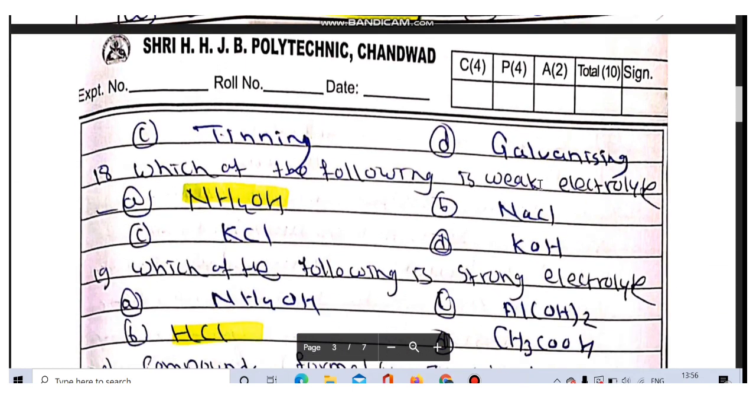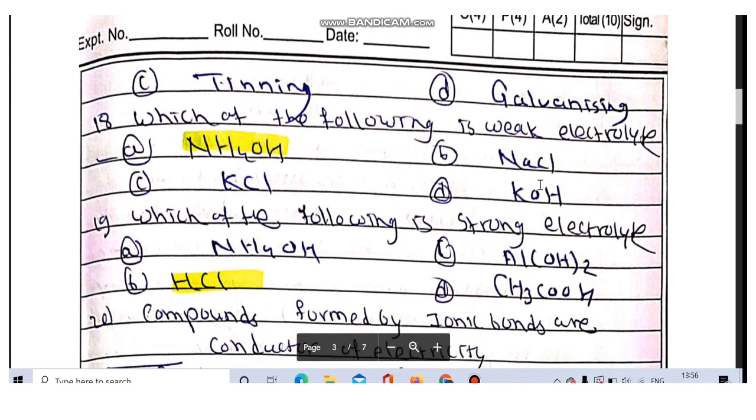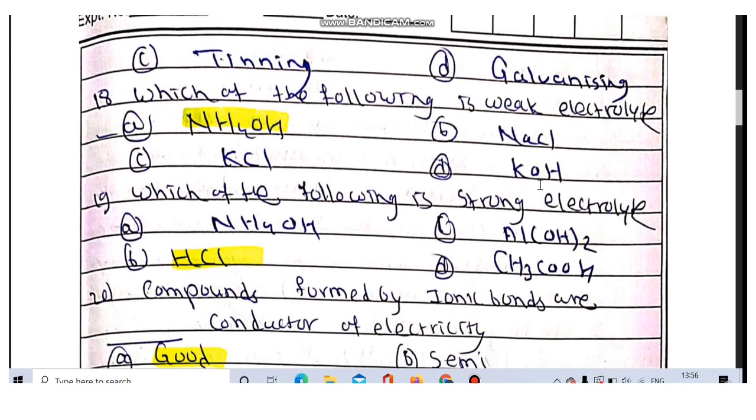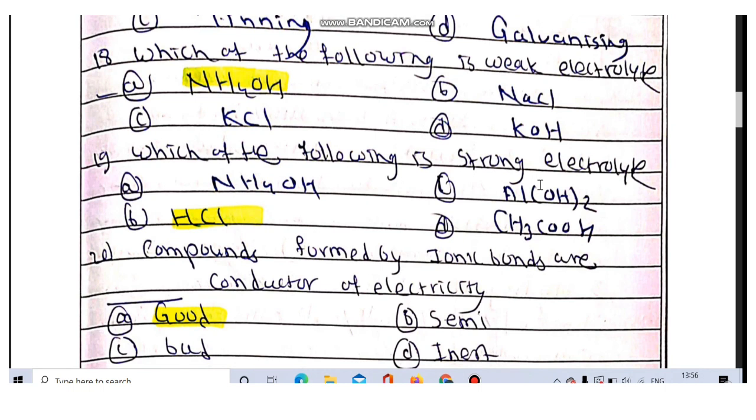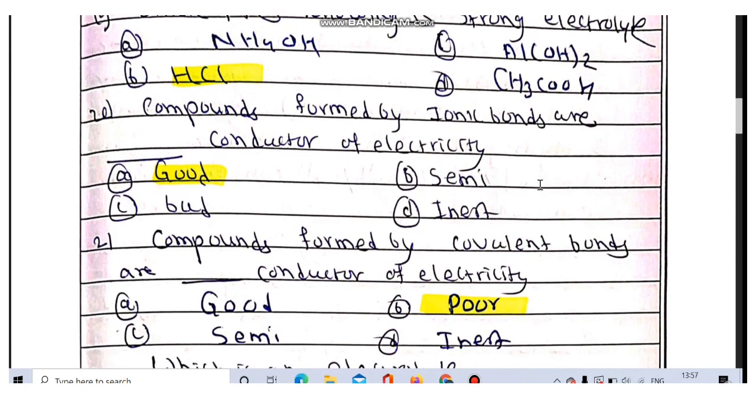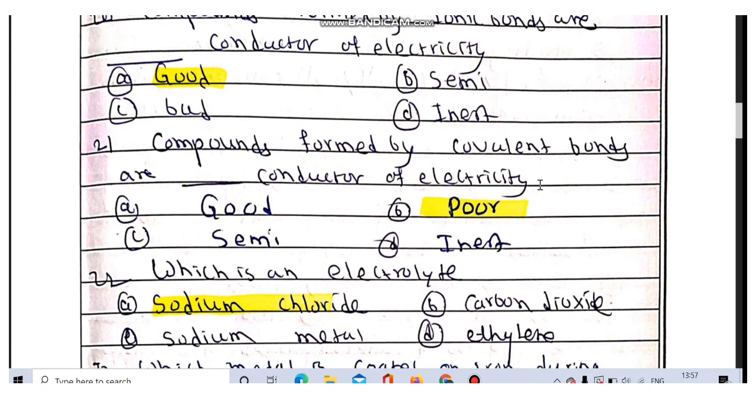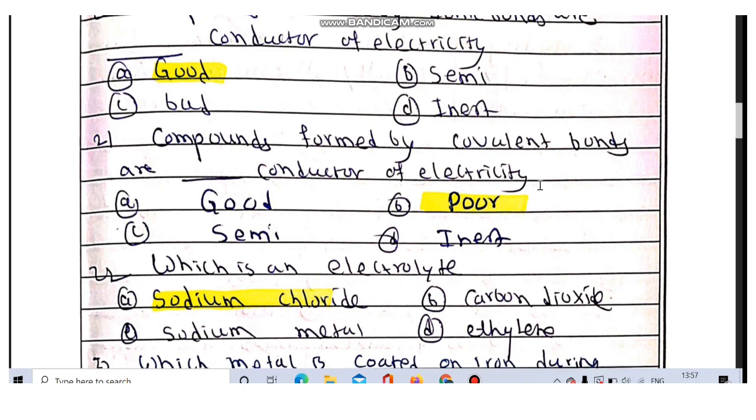Which of the following is a weak electrolyte? NH4OH is a weak electrolyte. Which of the following is a strong electrolyte? HCl is a strong electrolyte. Compounds formed by ionic bonds are good conductors of electricity. Compounds formed by covalent bonds are poor conductors of electricity.